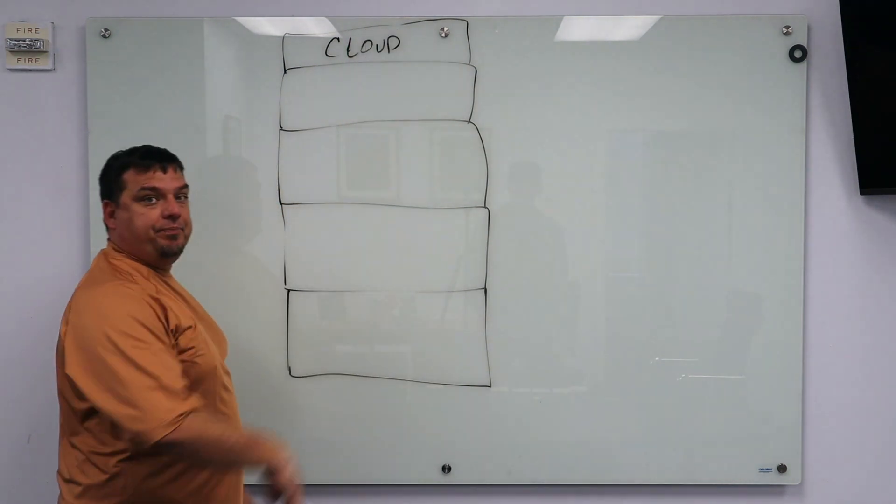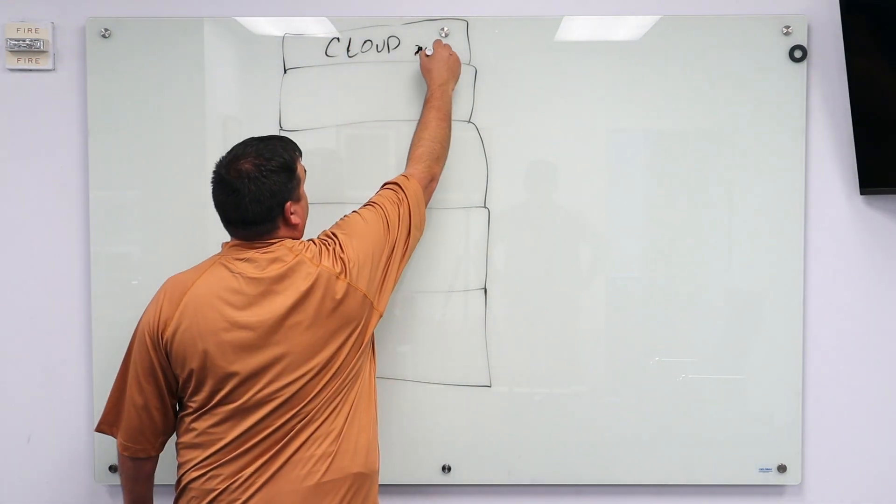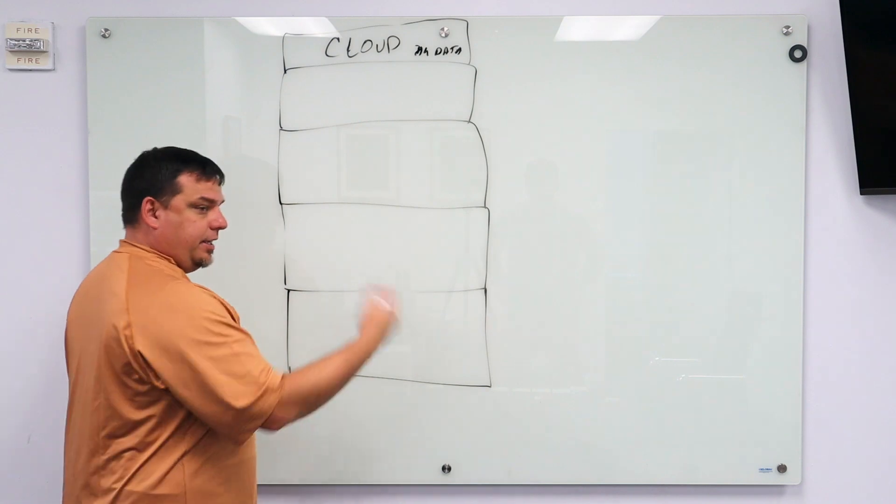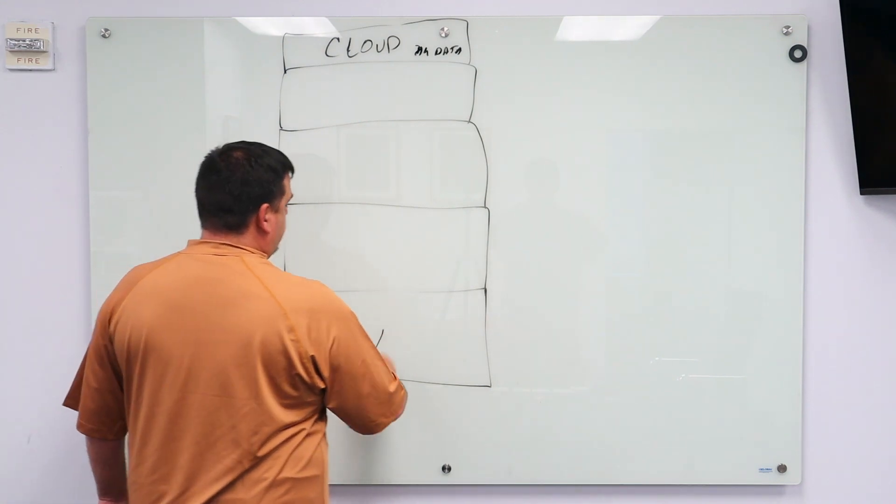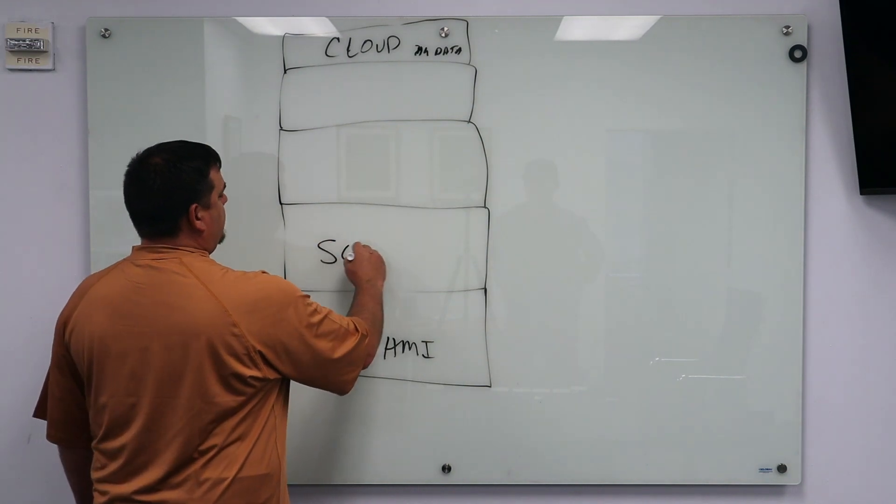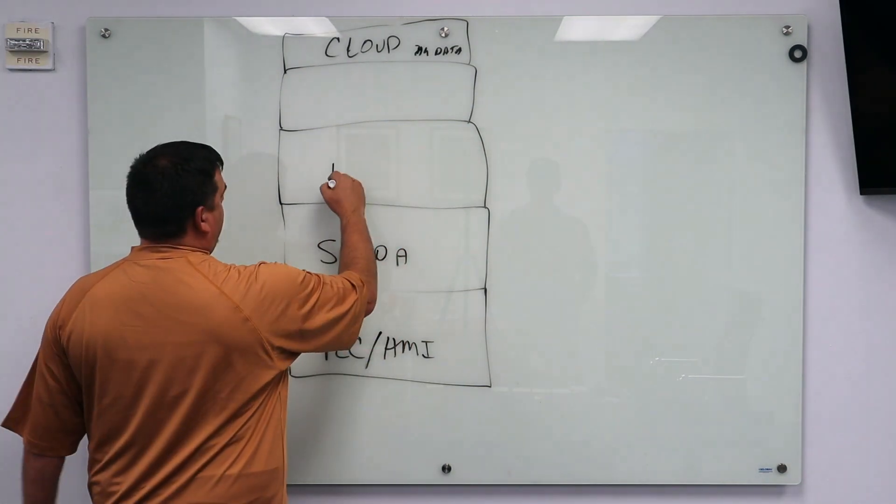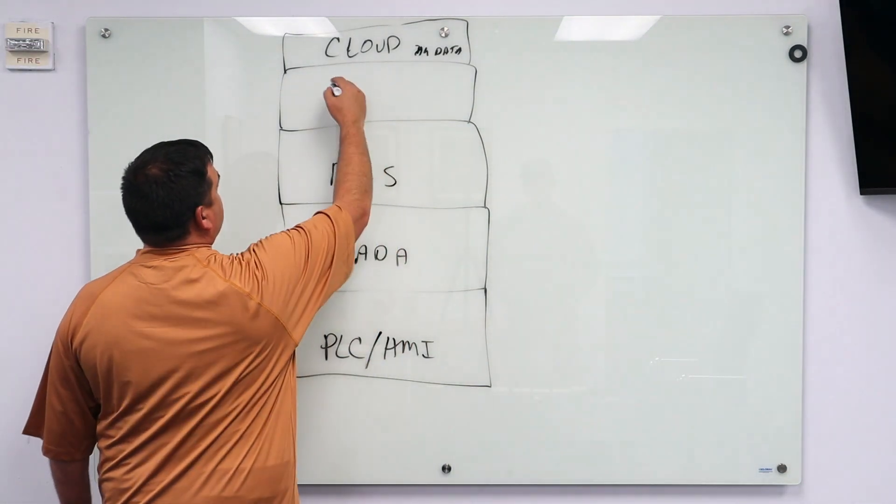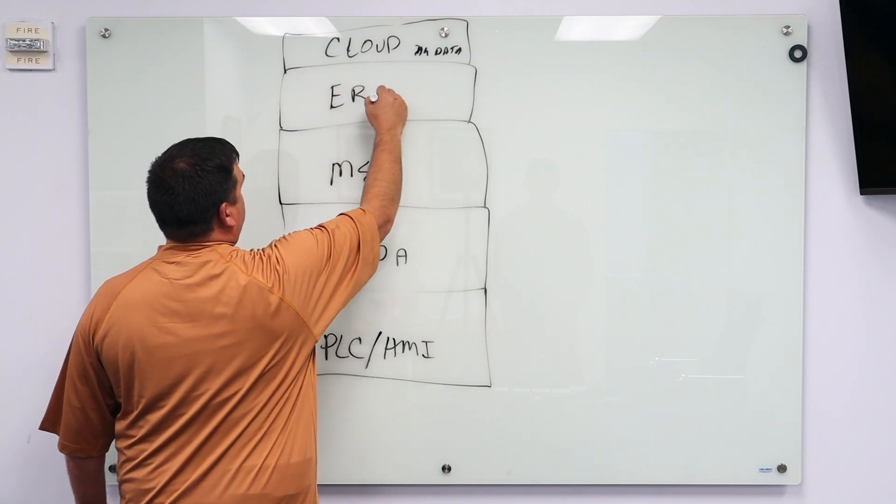Cloud all the way up at the top. This is big data, all that cool stuff, algorithms, machine learning. At the bottom, what we have is PLC, HMI. We have supervisory control and data acquisition. We have manufacturing execution systems, and we have ERP.